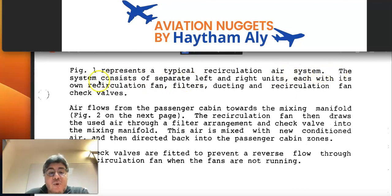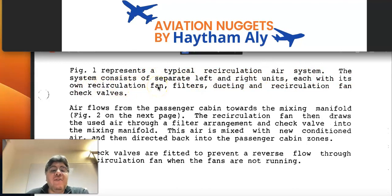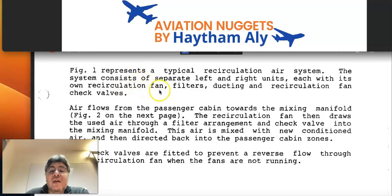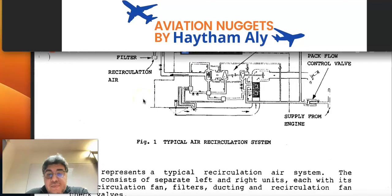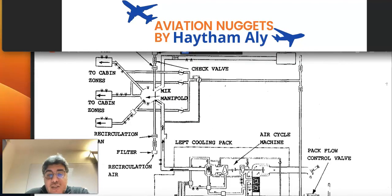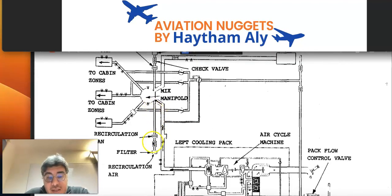The recirculation system is the main component here. The typical recirculation air system represents the function we now understand: to decrease load on the engine, decrease the bleed load, and reduce fuel consumption. The system consists of separate left and right units — the packs — each with its own recirculation fan. The recirculated air from the cabin goes through a filter, ducting, recirculation fan, and a check valve.